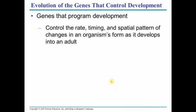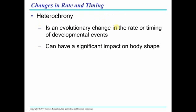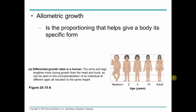There are also genes that program development — when they turn on and off to trigger when certain things grow, determining the spatial pattern of an organism's form. This is called heterochrony: the rate and timing of developmental events. 'Hetero' means differences and 'chrony' is time. This can affect the shape of the body — for example, humans undergo allometric growth, where different portions of the body grow at different rates. In a baby, the head takes up one-fourth of the body, about 25%. Over time, the rate of head growth slows and the rate of torso and leg growth increases — differential growth rates.